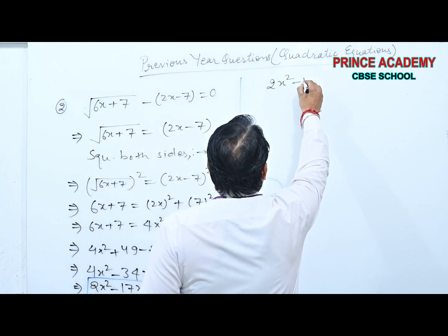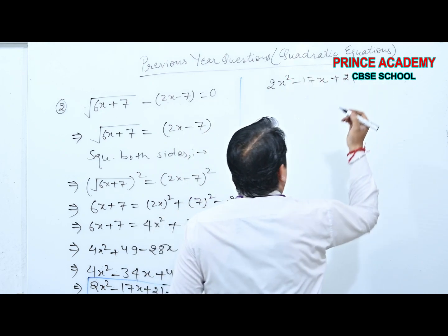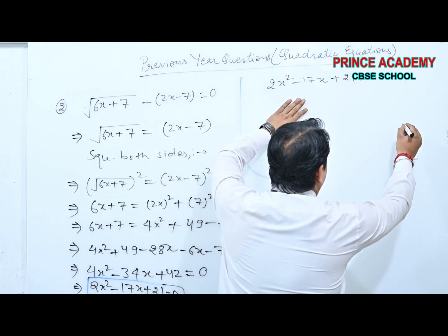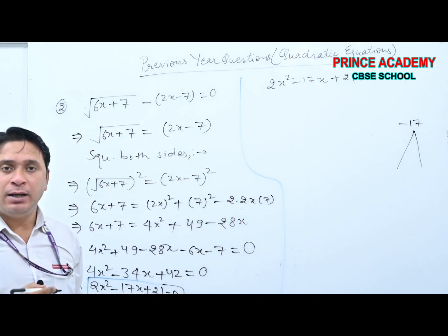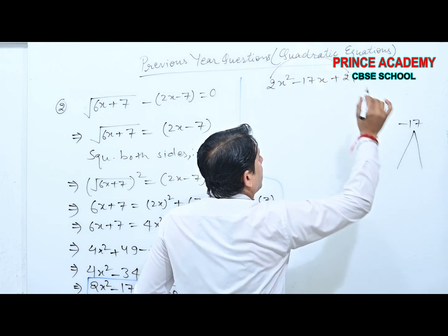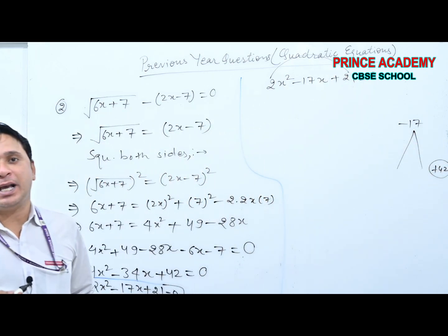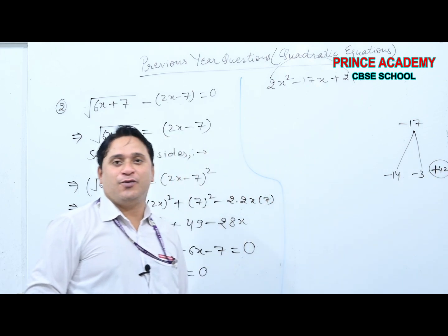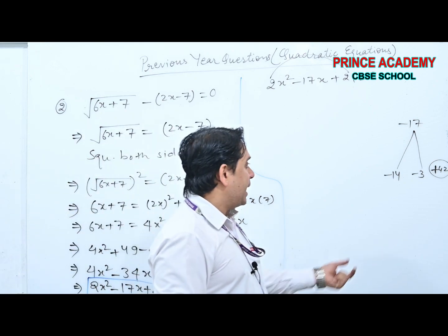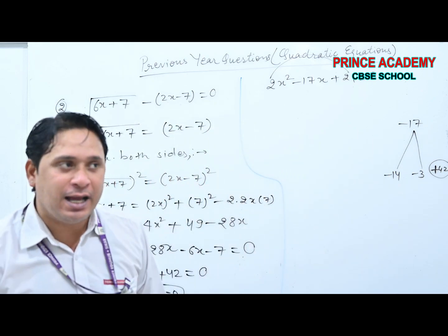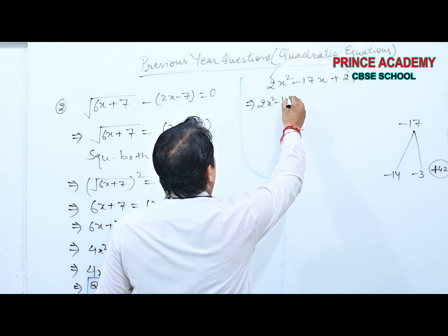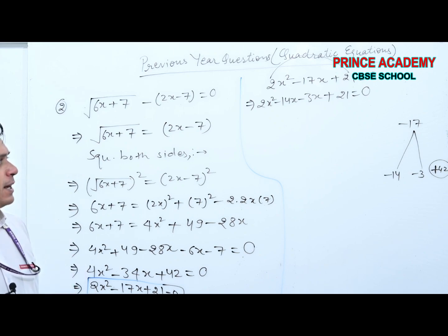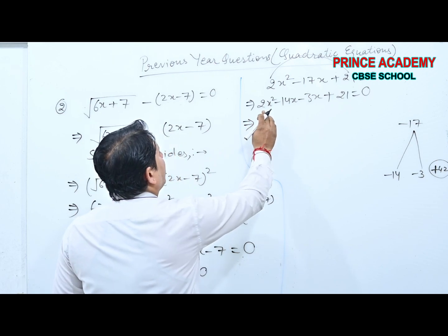So 2x² − 14x − 3x + 21 = 0. Taking 2x common from the first pair and −3 from the second: 2x(x−7) − 3(x−7) = 0. This gives (x−7)(2x−3) = 0, so x = 7 or x = 3/2.